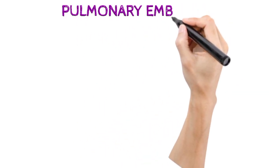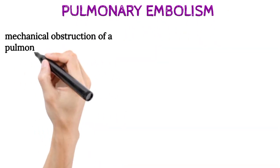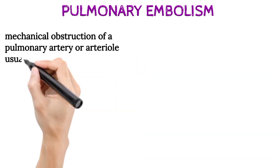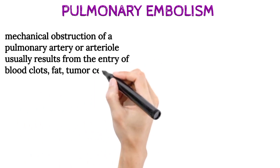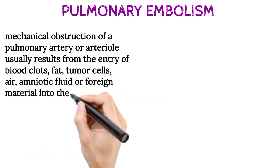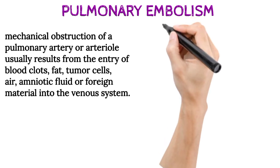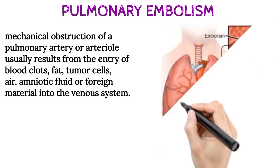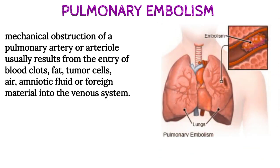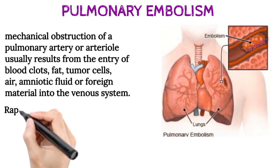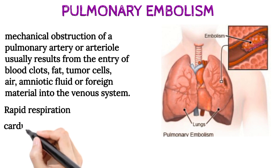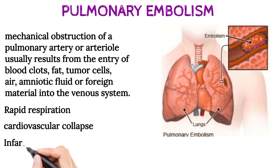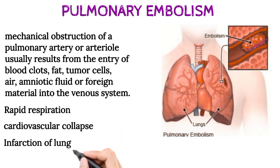Pulmonary embolism is a mechanical obstruction of a pulmonary artery or arteriole, which usually results from the entry of blood clots, fat, tumor cells, air, amniotic fluid, or foreign material into the venous system. It is the most common cause of death within the first 10 post-operative days. Massive pulmonary embolism causes rapid respiration, cardiovascular collapse, and death, while smaller pulmonary embolism may cause infarction of lung tissue.